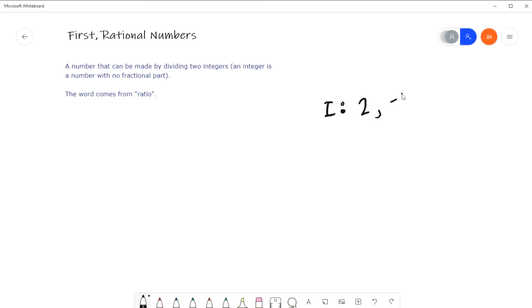So integers are numbers like, here are lists of integers. Numbers like two, negative three, one, 100. Those are all integers, right? The word rational comes from the base ratio. So rational numbers are just numbers which have a ratio, AKA they are dividing.